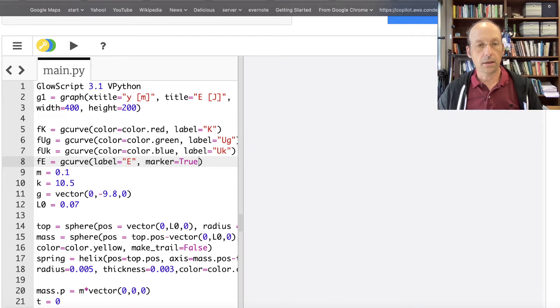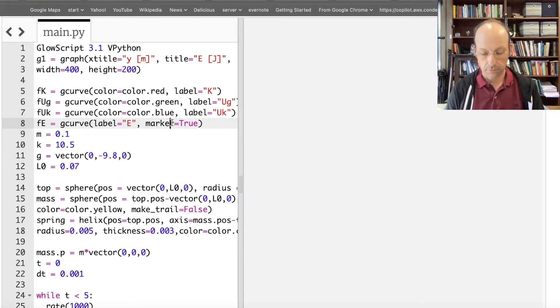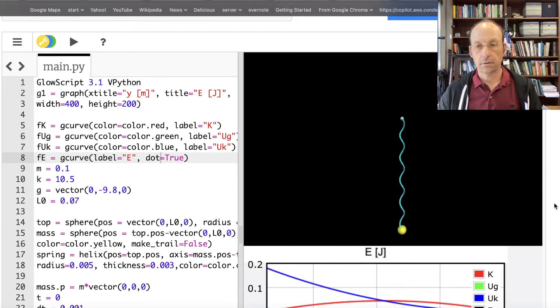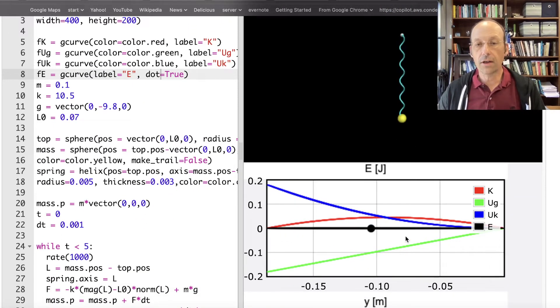No, it didn't like that. Maybe it's dot equals true. Yeah. And then that shows you the current value of it. So it does oscillate back and forth and it shows you the energy oscillating back and forth.